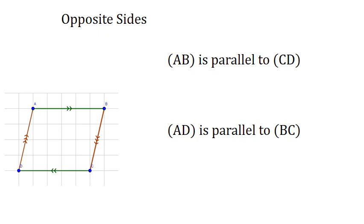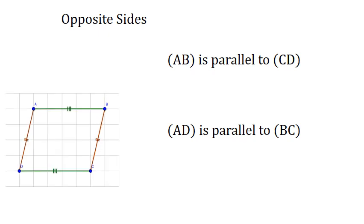What is the next property of opposite sides? We have opposite sides are equal. Look for the side AB and the side DC, both are dashed by three dashes. Also AD and BC, both are coded by two dashes. So we have AB equal CD and AD equal BC. So the opposite sides of a parallelogram are parallel and equal at the same time.